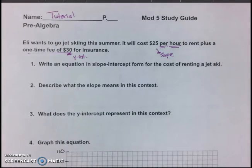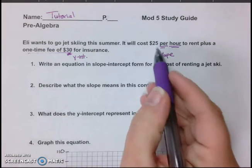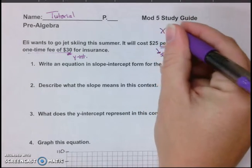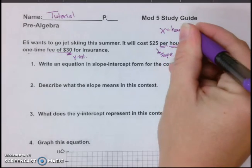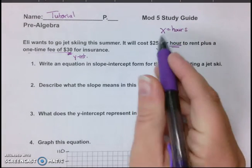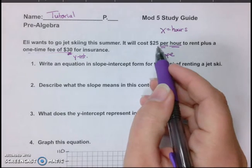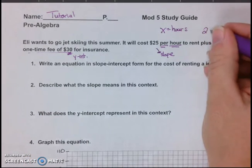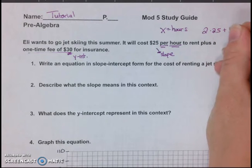Which makes sense if you think about it, right? So if Eli goes jet skiing for, let's take two hours, you'd have to take 25 times 2. And so x is going to be the number of hours that he goes jet skiing. You take 25 times 2, that's $50 for the two hours, plus the $30 insurance.